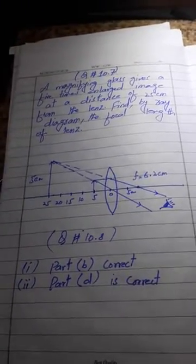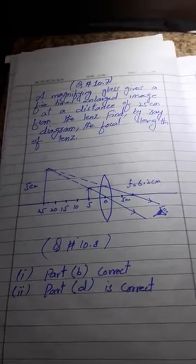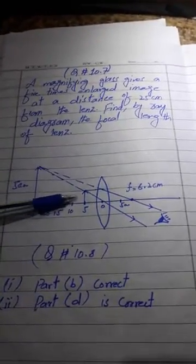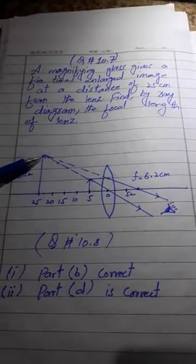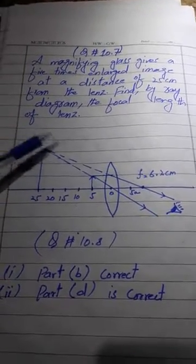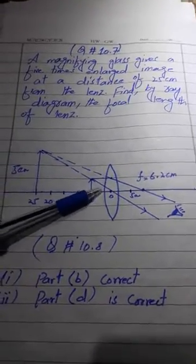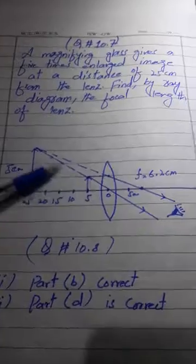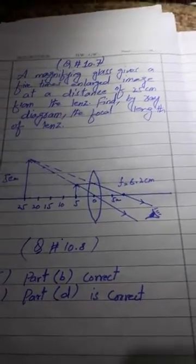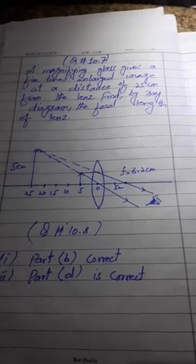This was question number 10.6. Now come to question 10.7. A magnifying glass, which is a convex lens, gives five times enlarged image at a distance of 25 centimeter. For example, you are considering this object one centimeter, the enlarged image five times will be five centimeter, and that image is formed at the distance of 25 centimeter. Find by the ray diagram the focal length of the lens. When we draw the ray diagram, you will see that this line is passing through the focal point of the lens and that point is 6.2 centimeter, so that will be the actual focal length of the convex lens.